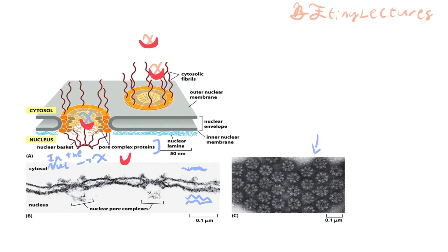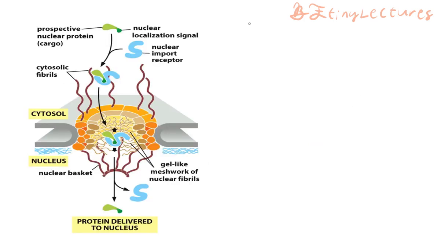Here we can see a collection of nuclear pores — all these gates look like flowers with a magnificent structure. Under a microscope this is truly fascinating. Protein X has a nuclear localization signal — signal W — and this signal tells it to go into the nucleus.